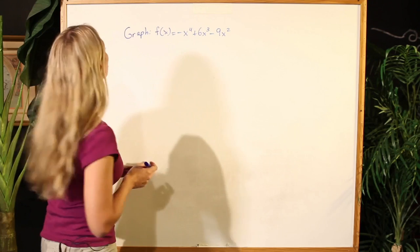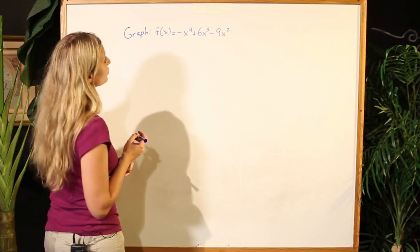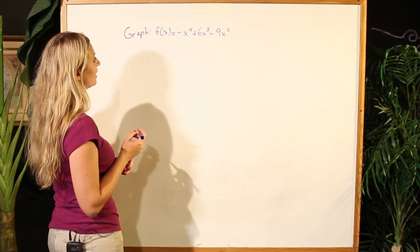Consider the following function: f of x is equal to negative x to the fourth plus 6x cubed minus 9x squared.